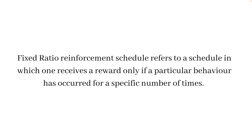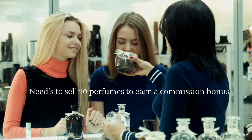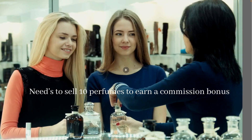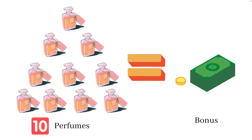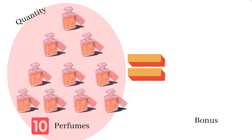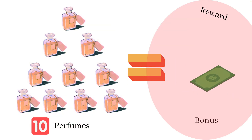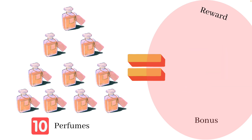The fixed ratio reinforcement schedule refers to a type of reinforcement schedule in which one receives a reward only if a behavior has occurred for a specific number of times. For instance, a perfume seller is instructed that she will earn a bonus commission only when she sells 10 perfumes a day. Fixed ratio schedules are most effective when behavior modification is aimed at quantitative changes — optimizing the quantity of output rather than the quality.